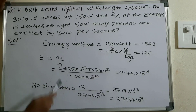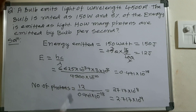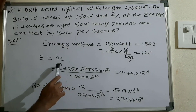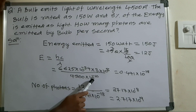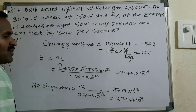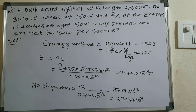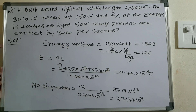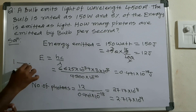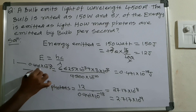The energy of one photon is hc divided by lambda. h is 6.625 into 10 power minus 34, speed of light is 3 into 10 power 8, and lambda is 4500 Angstroms. One Angstrom equals 10 power minus 10 meters. After simplification you will get 0.441 into 10 power minus 18 joules — this is the energy of one photon.